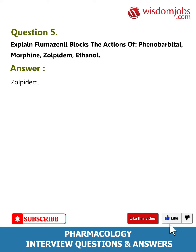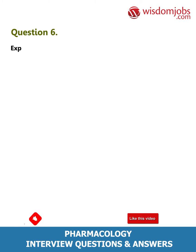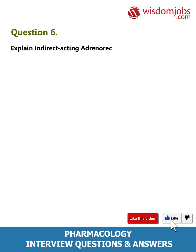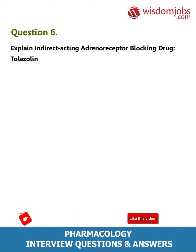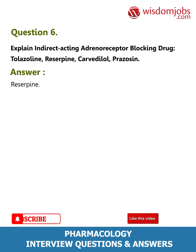Question 5: Flumazenil blocks the actions of which agent — phenobarbital, morphine, zolpidem, or ethanol? Answer: Zolpidem. Question 6: Which is an indirect-acting adrenoreceptor blocking drug — tolazoline, reserpine, carvedilol, or prazosin? Answer: Reserpine.